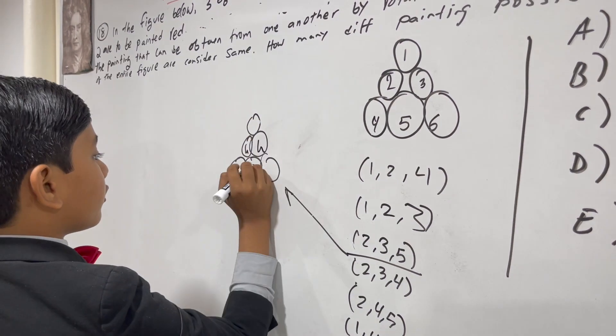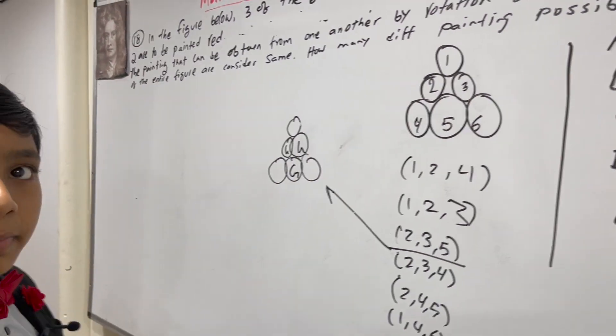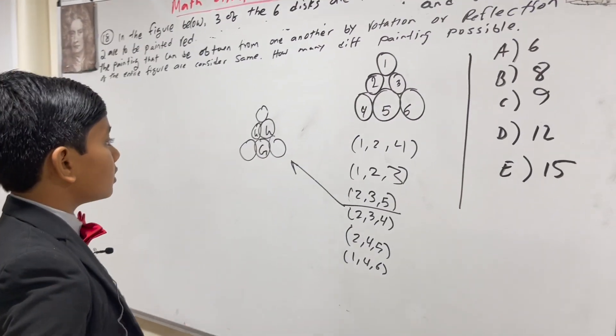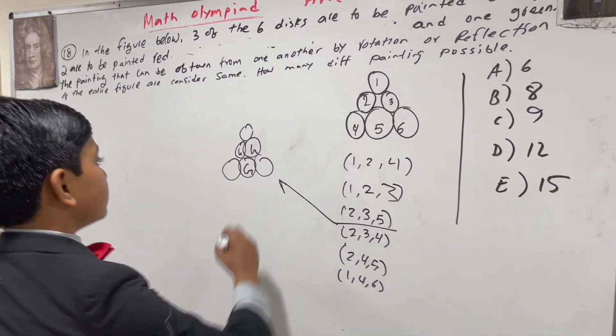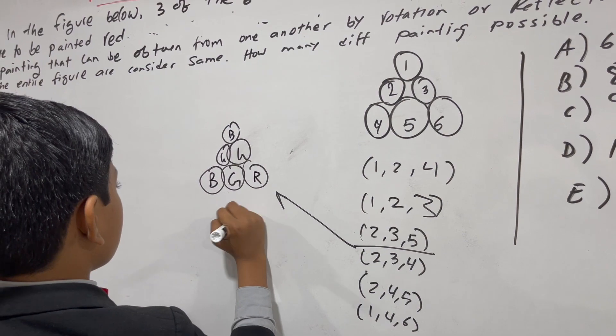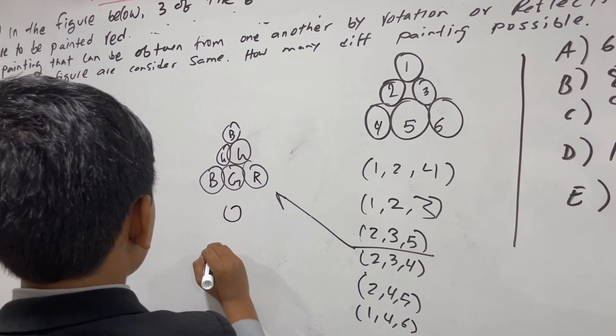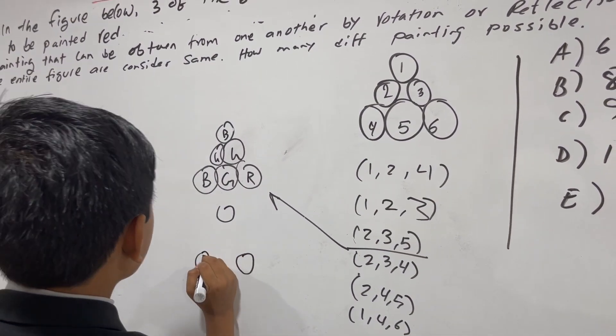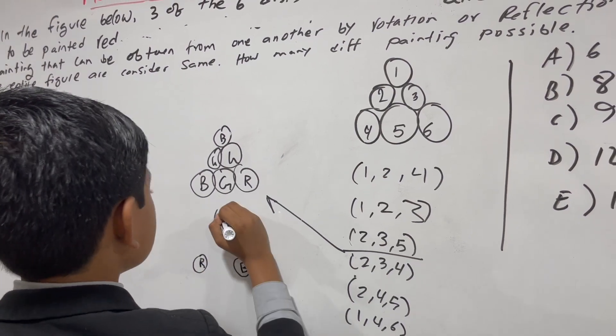So, 2, 3, 4, 5. So, those ones are painted green. So, there were two arrangements here. You could have them like this. Or, you could have them, for example, like this.